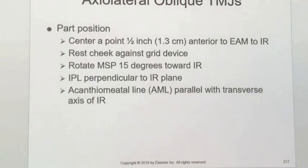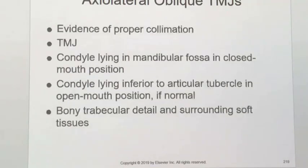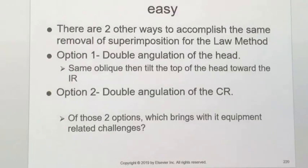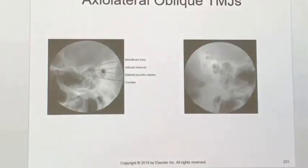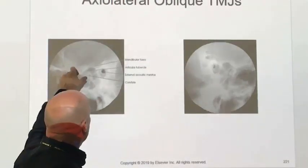Each of those TMJ views — Schuler's axial lateral and Law axial lateral oblique — must be done open and closed mouth unless there is some contraindication. On the resulting Law method image you can see the condylar process and the mandibular fossa clearly separated.